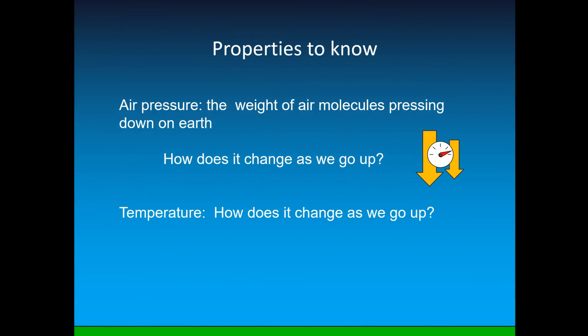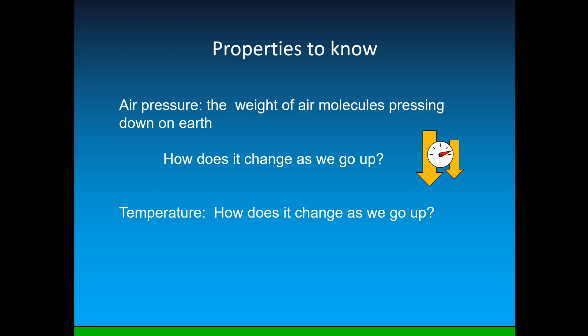Some properties of the atmosphere that you need to know are first, air pressure. Air pressure is the weight of air molecules pressing down on the earth. How does it change as we go up? Think about that for a minute. Air pressure decreases as we go up because there is always less air above us pressing down. How does temperature change as we go up? This one's way more complicated. Let's take a look.